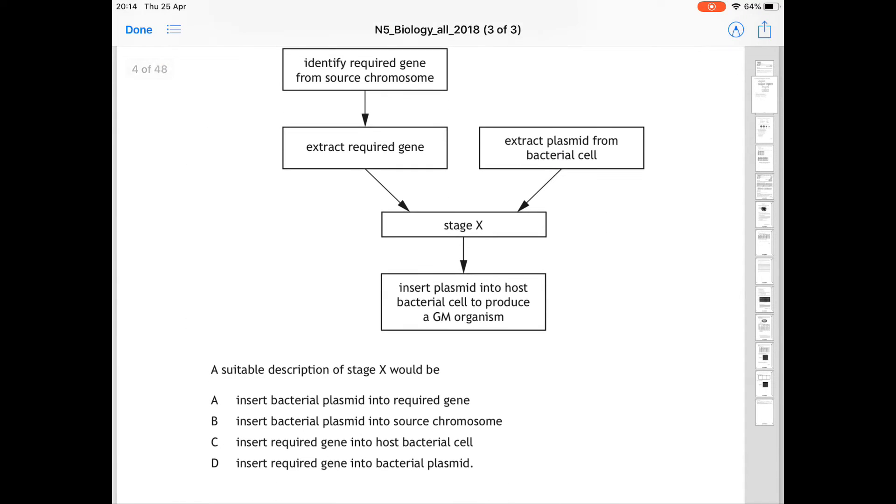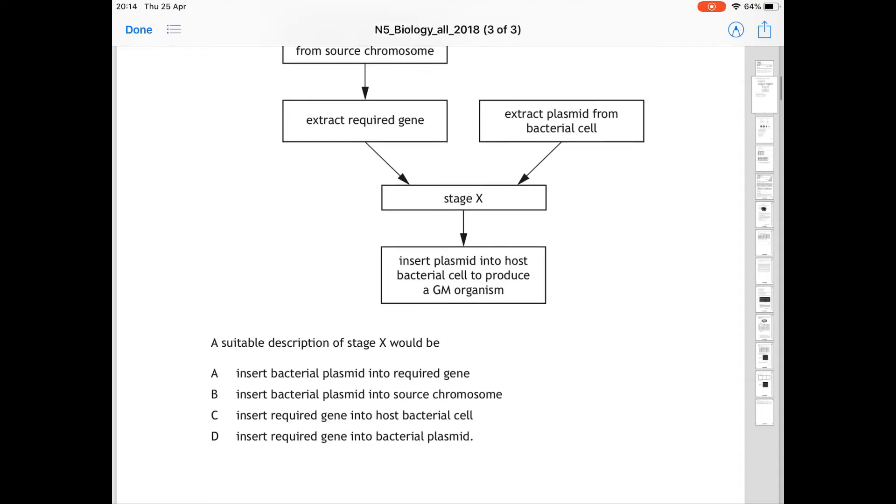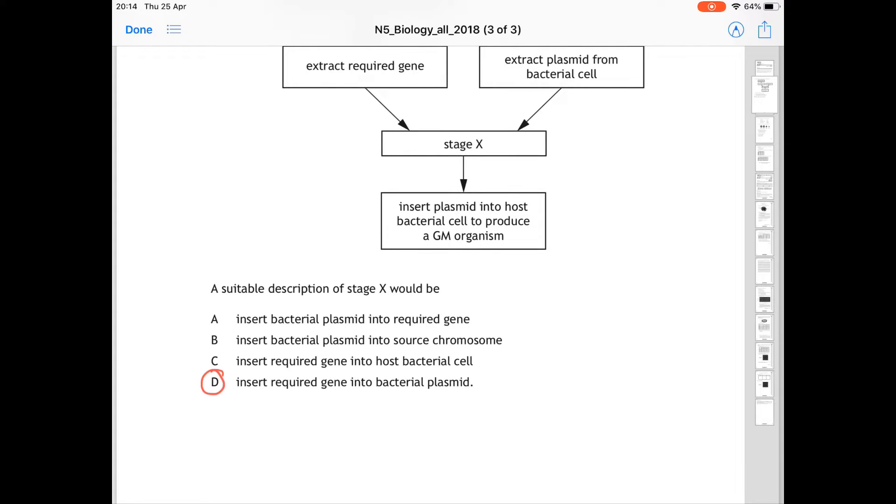Question 6 is looking at the stages of genetic engineering. They start off with identifying the required gene from a source chromosome. The next step is that they extract the required gene, and at the same time, the plasmid is extracted from a bacterial cell. Then there is a stage X, and after stage X, the plasmid is inserted into the host bacterial cell to produce a genetically modified organism. If you look at the stage prior to stage X, because the gene has been extracted and the plasmid has been extracted, the next step really has to be that the required gene is inserted into the bacterial plasmid. So in this case, question 6 would be D. Insert required gene into the bacterial plasmid, so then that plasmid can be inserted into the host bacterial cell to produce a GM organism.